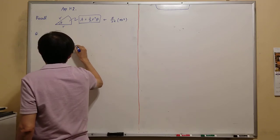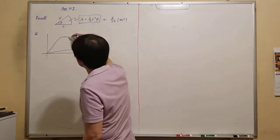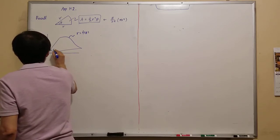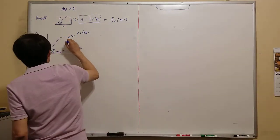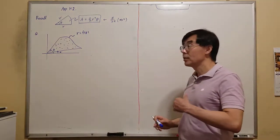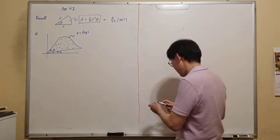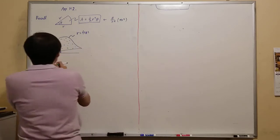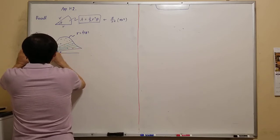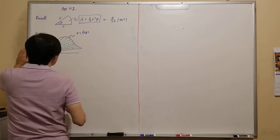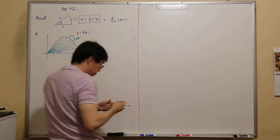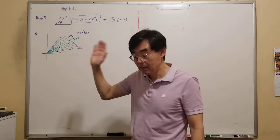We want to find the area of the region bounded by the sector-like region r = f(θ) from angle alpha to beta. We will introduce a good approximate value by splitting this region into small stripes like this.